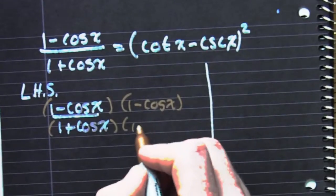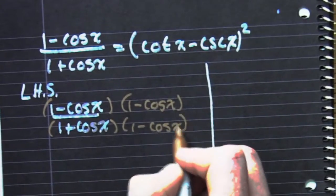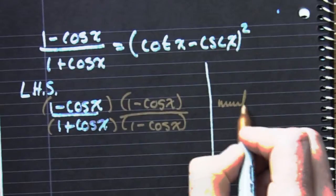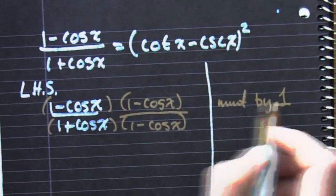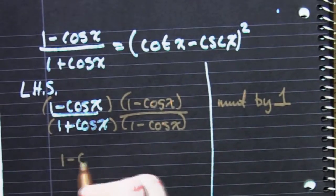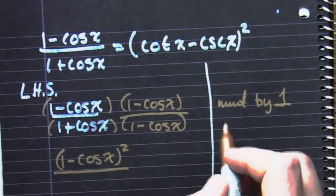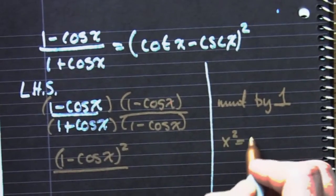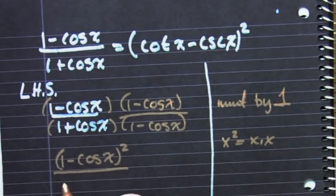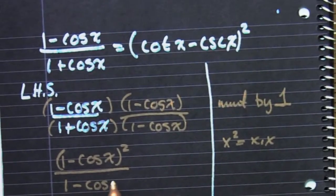Multiplying top and bottom by the magic one, or (1 - cos x)/(1 - cos x). When we do that, in the numerator, whoa, why don't we just square? Wow! Square them! Good idea! Because if you have something times itself, it's itself squared.